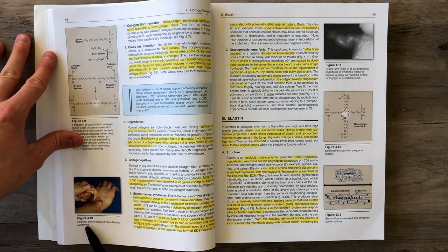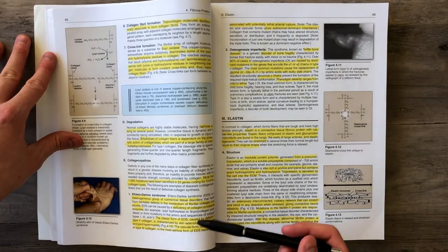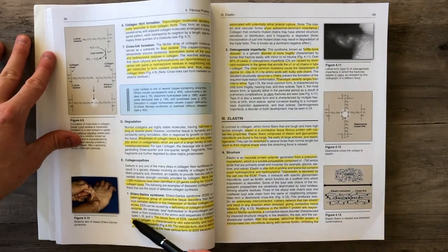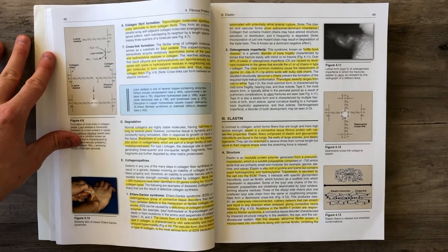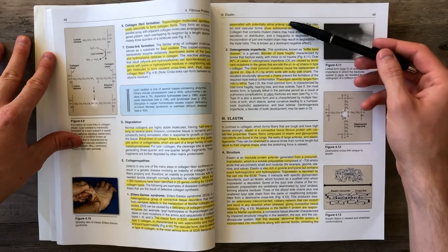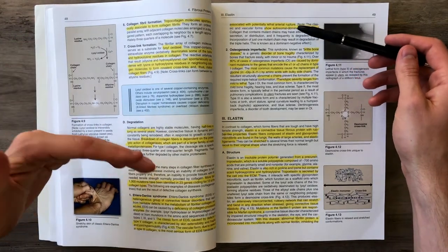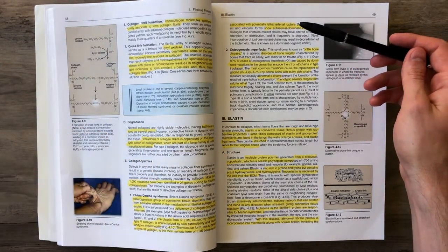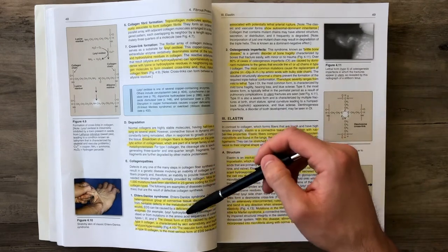The classic form involves an issue in type 5 collagen, resulting in skin extensibility and fragility. There's also a vascular form from type 3 collagen defects, which is very serious because you can have arterial rupture as they can spontaneously burst.